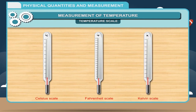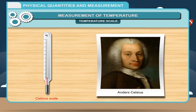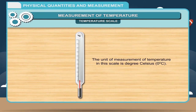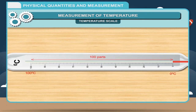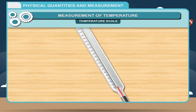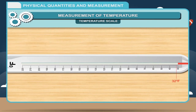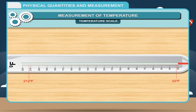The Celsius scale was designed by Anders Celsius (1701–1744). The unit of measurement is degree Celsius (°C). The lower fixed point (ice point) is 0°C and the upper fixed point (steam point) is 100°C. The interval is divided into 100 equal parts, each division being 1°C. On the Fahrenheit scale, the lower and upper fixed points are 32°F and 212°F respectively. The distance between these two points is divided into 180 equal parts, each division equal to 1°F.